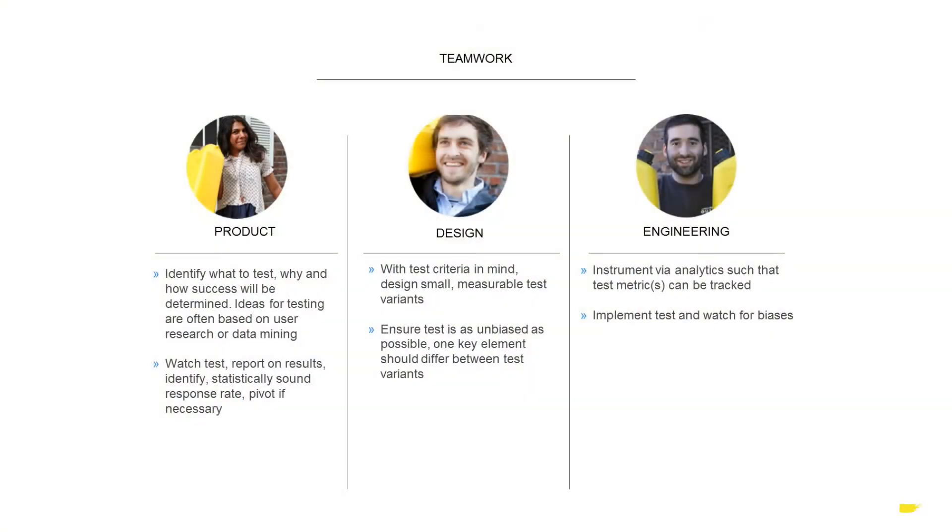Let's talk about the methodology of testing at Charity Water. First off, who's involved? It's really a trifecta between product, creative, and engineering. The three of us come together to determine what we're going to test and how. It starts with me and my team — we identify what to test using two approaches: feedback from user research and just mining our database. You can learn so much by identifying natural clusters in the data or patterns that tell you, oh, this is an area we should poke into. It's also my responsibility to pay attention once a test is deployed, give progress reports, and ensure it runs long enough with enough people interacting to produce statistically sound results.